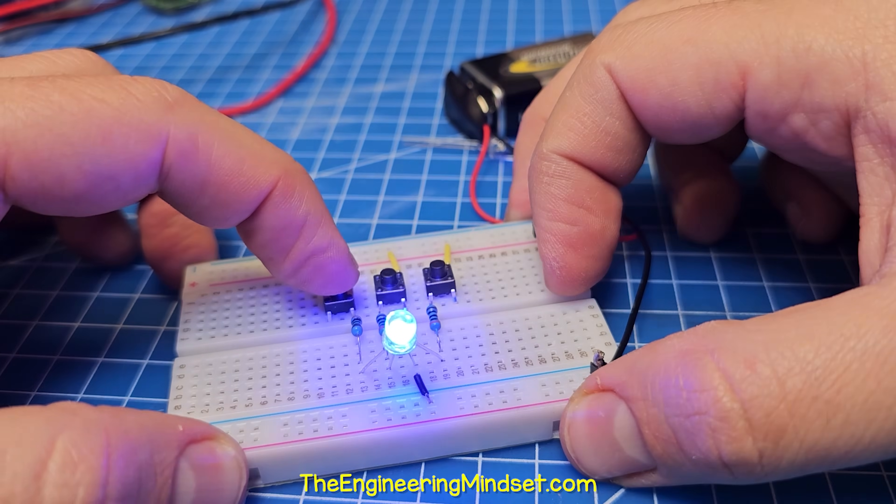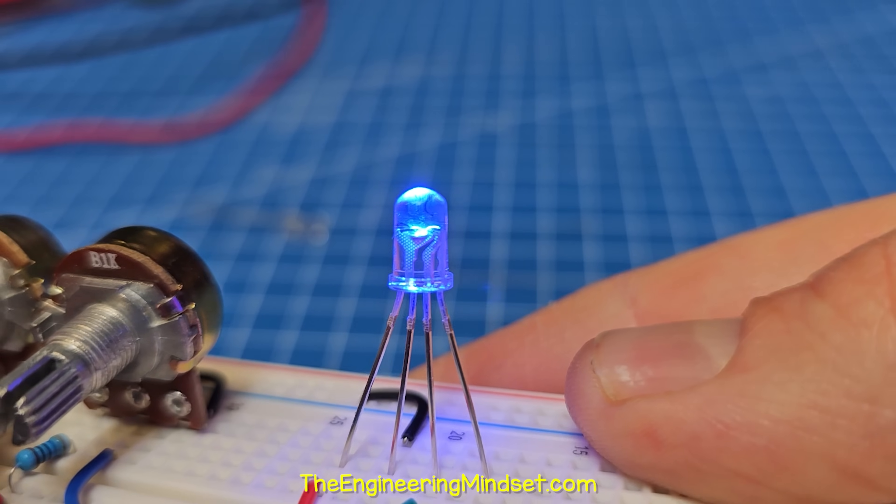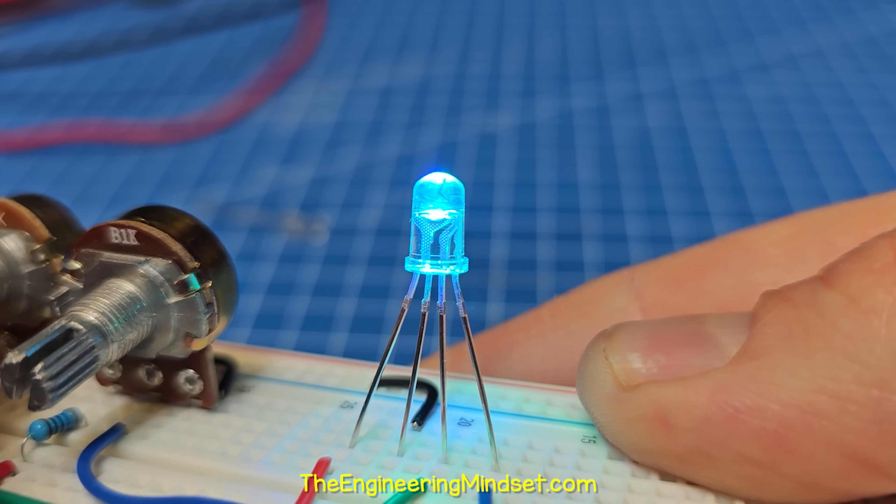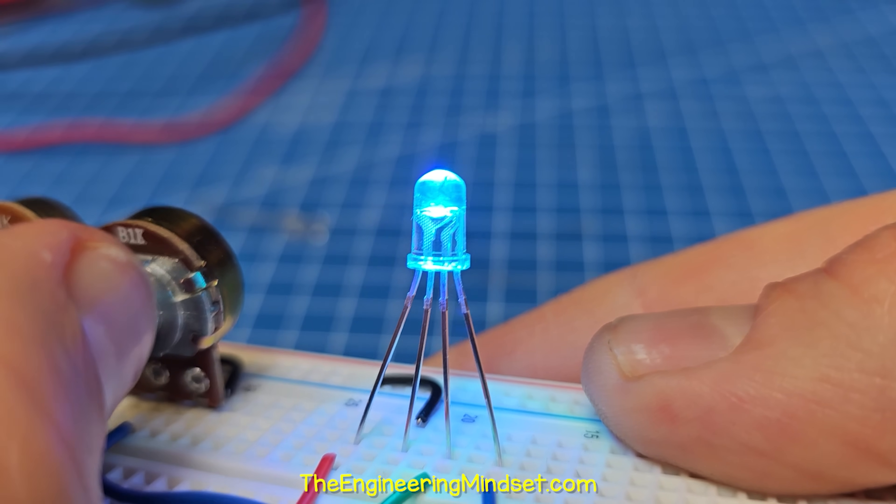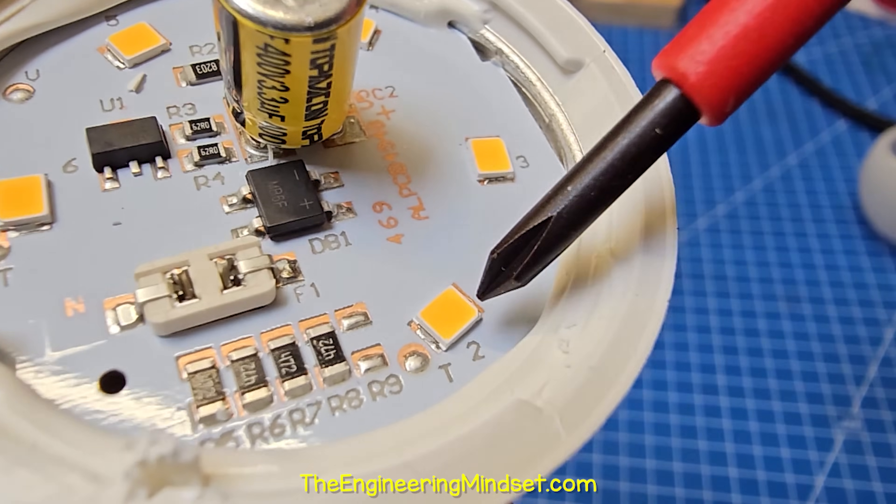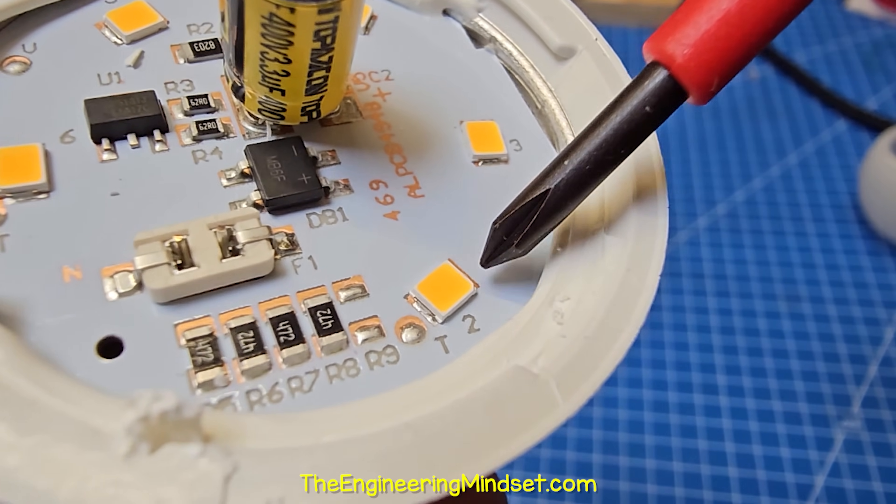Once red, green, and blue could be produced, we can mix these colors to produce any color we need, including white light. And when white light was possible, LED bulbs became widely used.